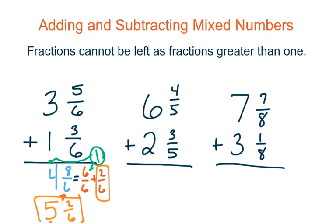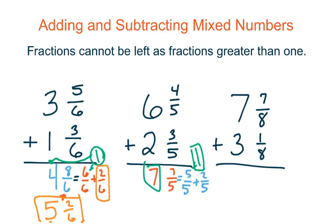Let's look at the next problem — we'll need to do something similar. When we add our fractions and whole numbers, we end up with 7 fifths and 7 wholes. We can't leave 7 fifths, so we rewrite it as 5 fifths plus 2 fifths. Since 5 fifths equals 1 whole, we add that 1 whole to our 7 wholes to get 8 wholes, then bring the remaining 2 fifths down. Our final answer is 8 and 2 fifths.